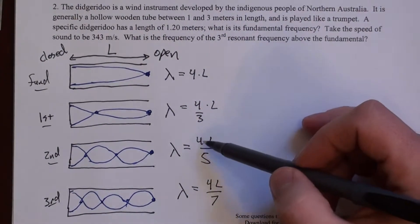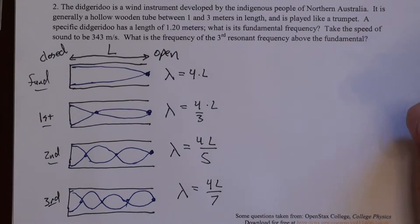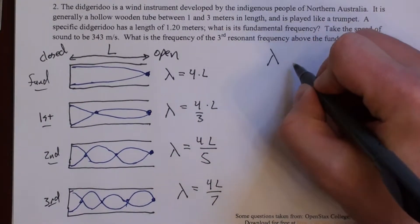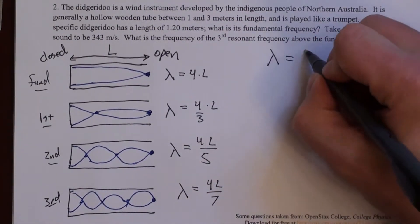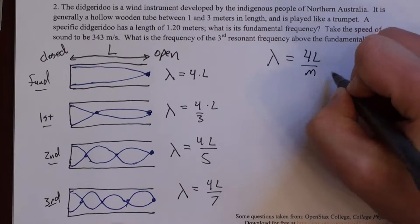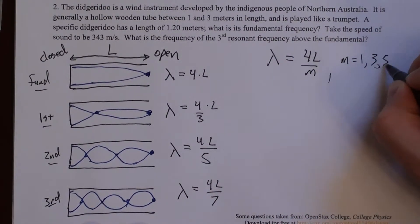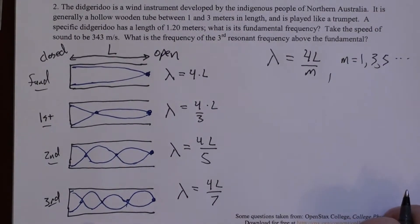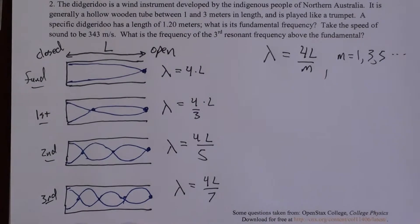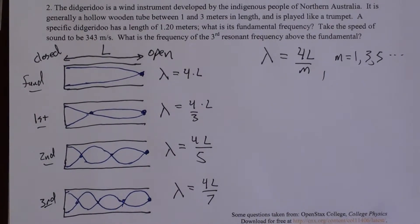So if you see what's happening here, I have four, four thirds, four fifths, four sevenths. And in general, lambda is four L over m, where m is one, three, five, and so forth. Only the odd numbers. And this leads to the characteristic harmonics that you get for open-closed instruments like trumpets or any brass instrument.